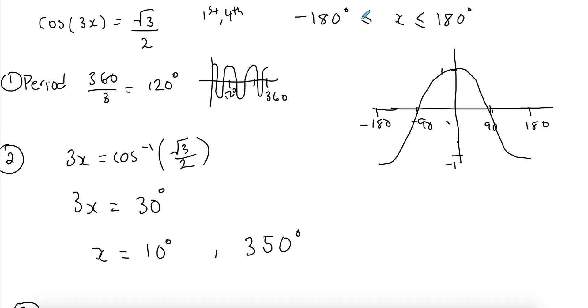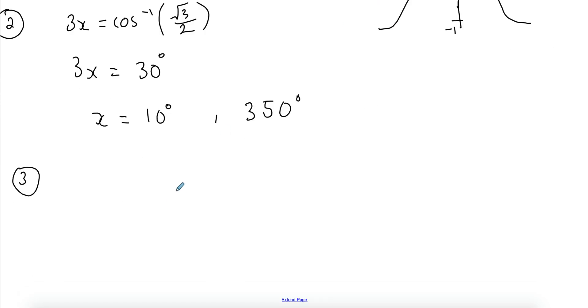So what we're going to do, because we want to go up to a negative 180, and also we want to catch all the solutions possible, we're going to add and subtract this 120 to both solutions and just make sure that we're within the domain. Now 350 is not in our domain, but we can't just discard it as a solution.